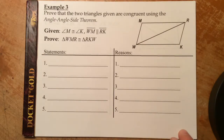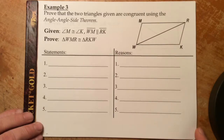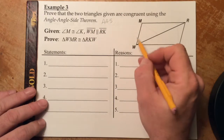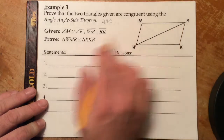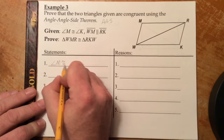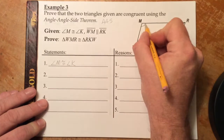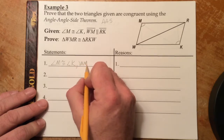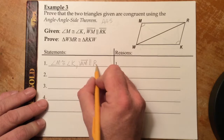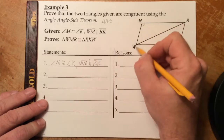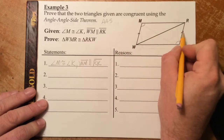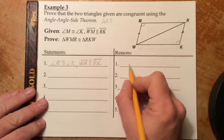Example 3: Prove that the two triangles given are congruent using the angle-angle-side congruence theorem. We have two triangles sharing one side. We're given that angle M is congruent to angle K — mark M and K as congruent. We're also given that side WM is parallel to side RK, so we draw parallel symbols on each.